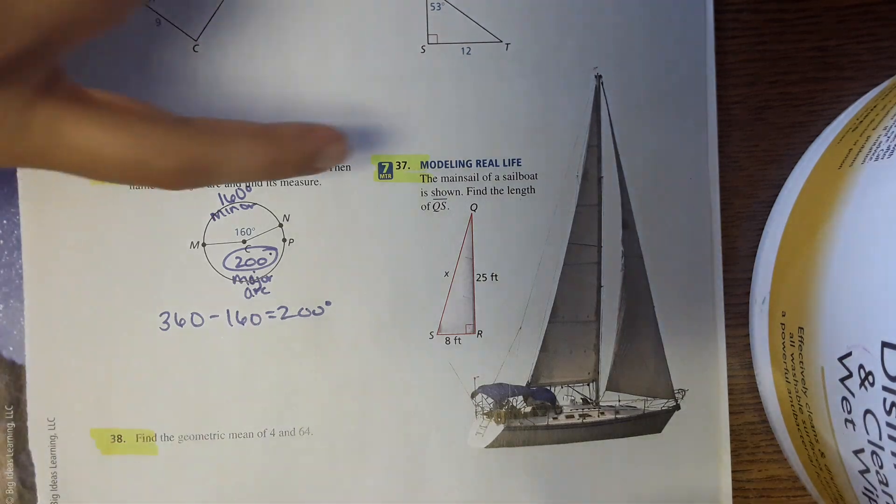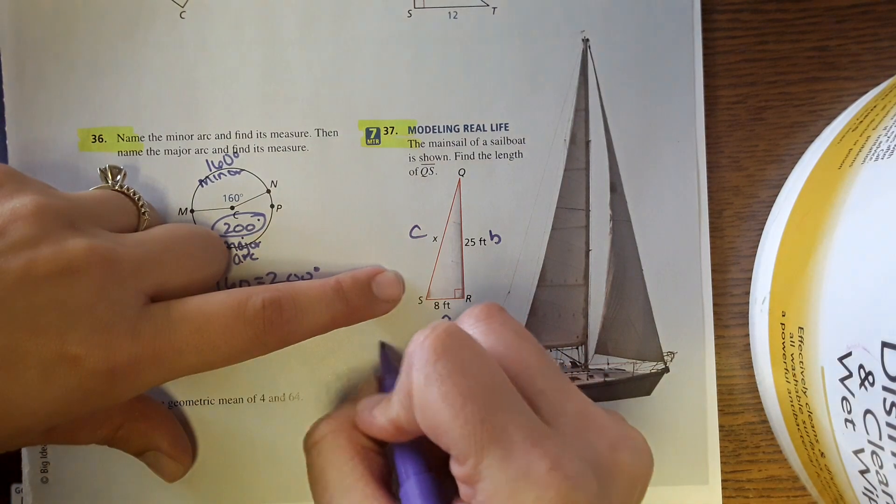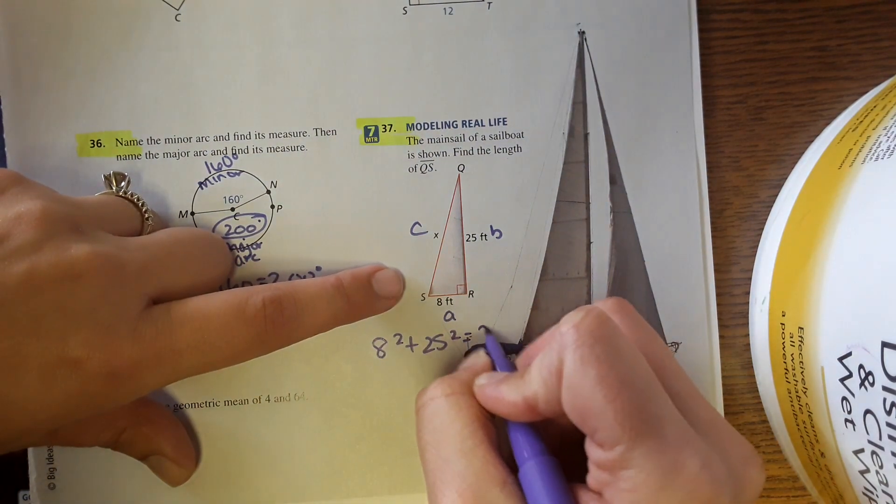Okay, then for number 37 you would use Pythagorean theorem to solve this. So this would be your a and b, and then this would be your c. So 8 squared plus 25 squared equals x squared, or c squared.